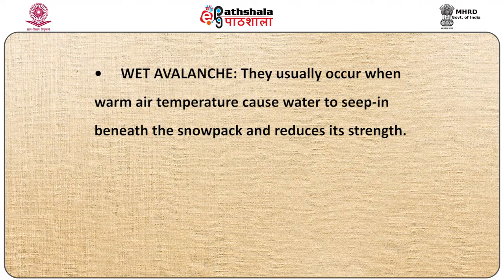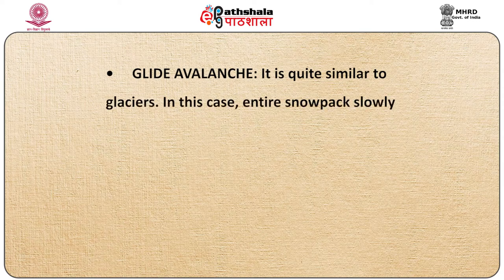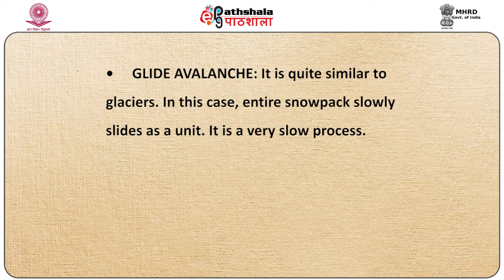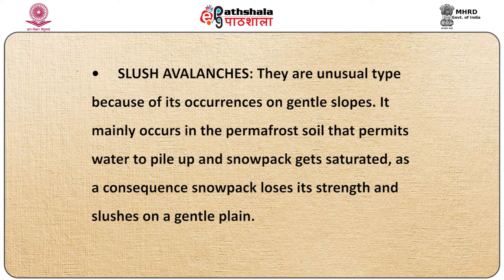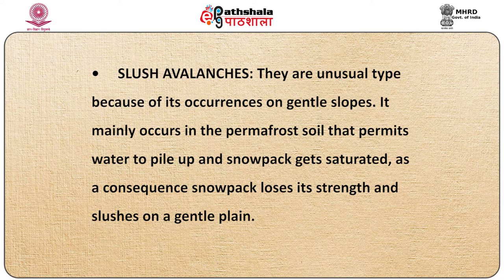Wet avalanche usually occurs when warm air temperatures cause water to seep in beneath the snow pack and reduce its strength. Glide avalanche is quite similar to a glacier, where the entire snow pack slowly slides as a unit in a very slow process. Slush avalanches are an unusual type occurring on gentle slopes, mainly in permafrost soil that permits water to pile up, causing the snow pack to become saturated, lose strength and slush on a gentle plane.